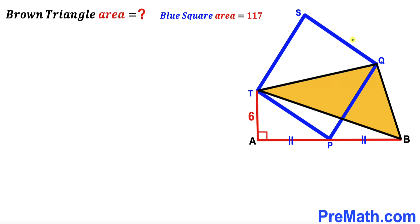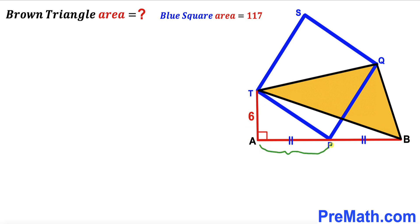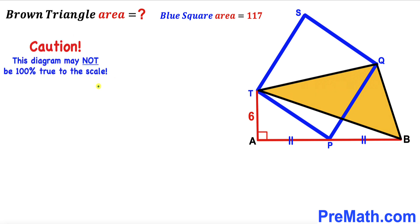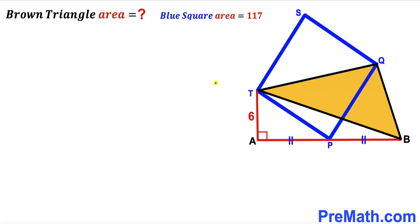Welcome to pre-math. In this video we have got this blue square PQST and this brown shaded triangle TBQ put together as you can see in this diagram. Moreover we have this right triangle TAB as well, such that segment AT is 6 units, segment AP is equal to segment BP, and the area of this blue square has been given to us as 117 square units. Our task is to calculate the area of this brown shaded triangle. Please keep in mind that this figure may not be 100% true to scale.